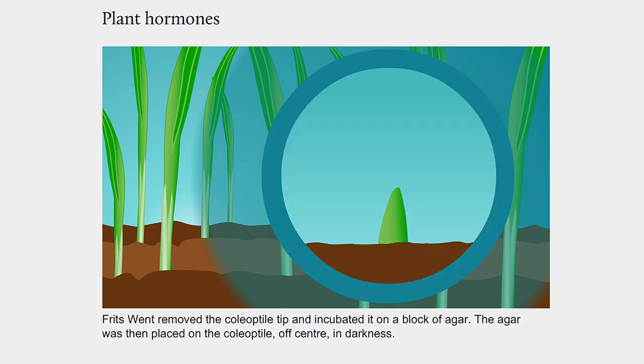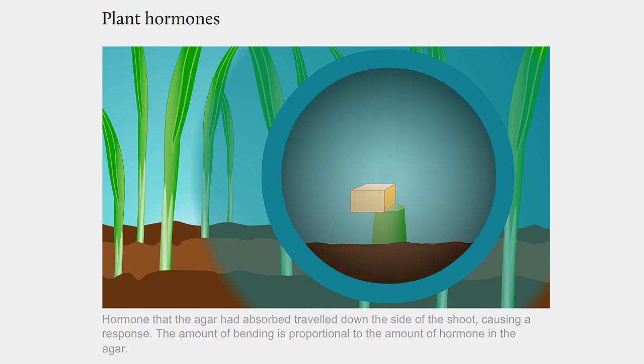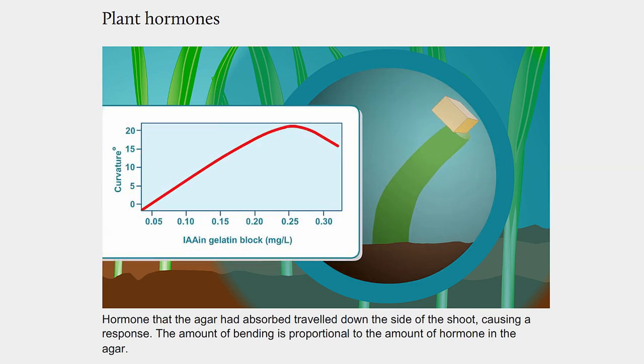Fritz Went removed the coleoptile tip and incubated it on a block of agar. The agar was then placed on the coleoptile off-centre, in darkness. Hormone that the agar had absorbed travelled down the side of the shoot, causing a response. The amount of bending is proportional to the amount of hormone in the agar.